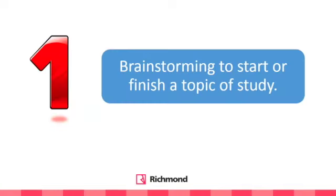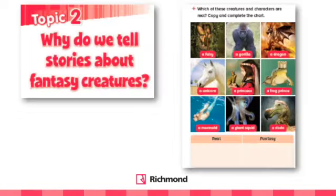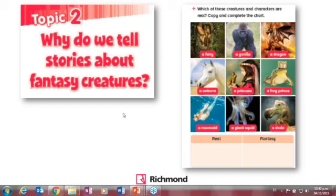The first idea is brainstorming before you start and when you finish a topic of study. CLIL is teaching content and language at the same time — learning things through English. For example, from one of our books, the topic is 'Why do we tell stories about fantasy creatures?' In this activity, students are asked which creatures and characters are real and which are fantasy, and they complete a chart.